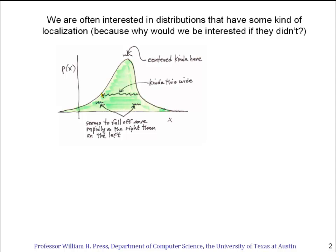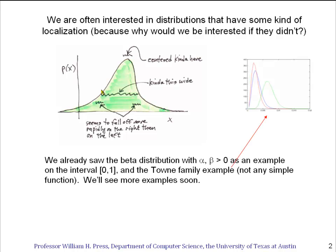What we'd like to be able to do is summarize these impressions of the shape of the probability of x in terms of a small number of numbers. We've already seen distributions that do have this somewhat localized property. We saw beta distributions when we did Bernoulli trials, and we saw these distributions that don't really have any simple functional form. They were the product of lots of binomial terms when we looked at the example of the town family.